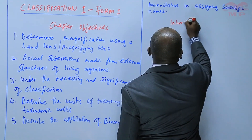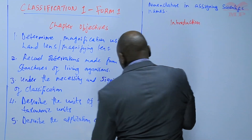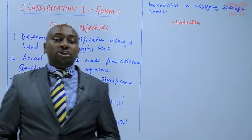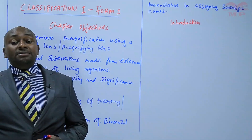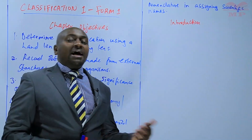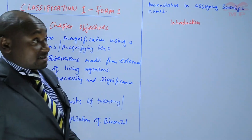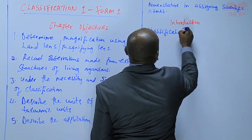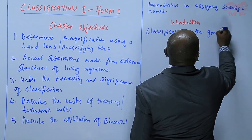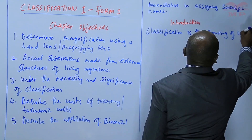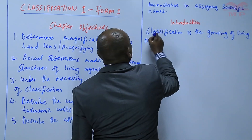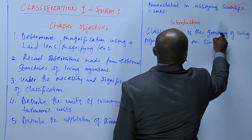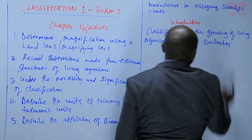First of all, I would like us to have a short introduction about what classification is all about. We can say that classification is the grouping of living organisms based on similarities and differences in their characteristics.